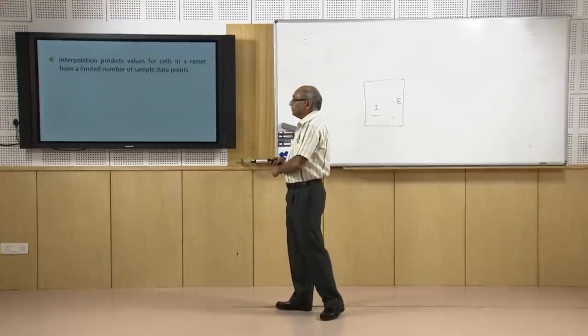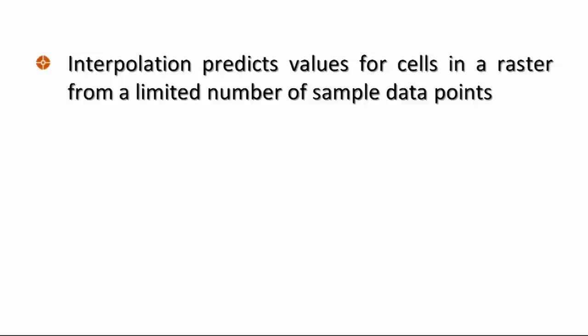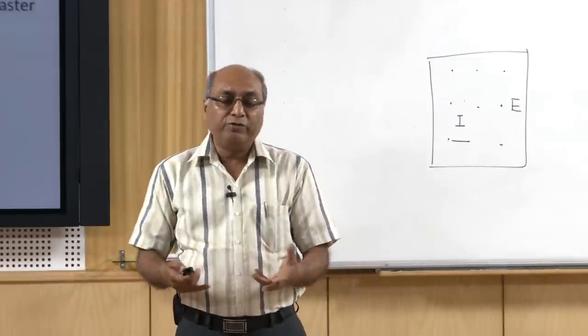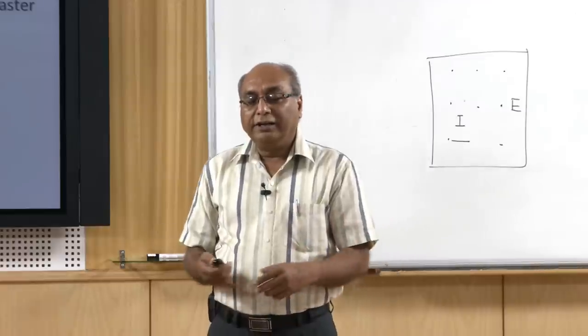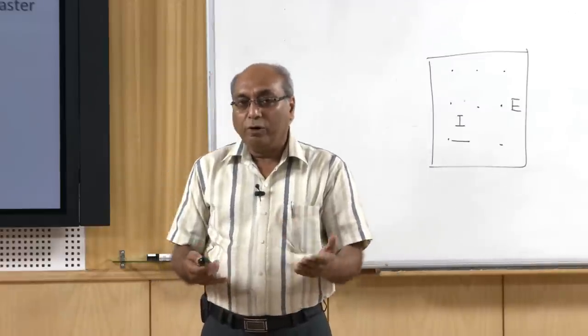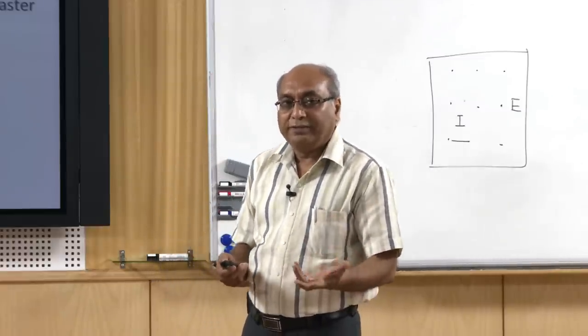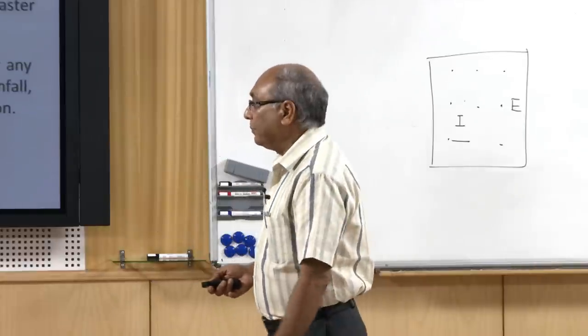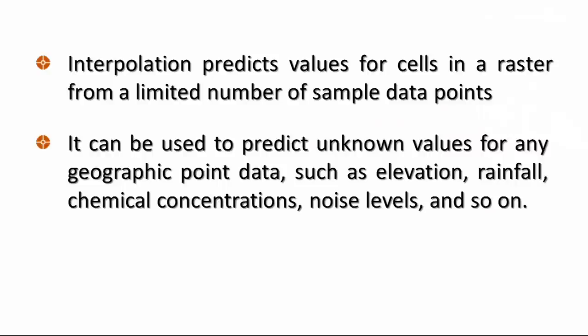Interpolation predicts values for cells in a raster from a limited number of sample data points. The advantage is that with say 100 observations for an area, you can create a surface that gives a lot of information otherwise very difficult or near impossible to extract from just point data. It can be used to predict unknown values for any geographic point, such as elevation, rainfall, chemical concentrations, or noise levels.